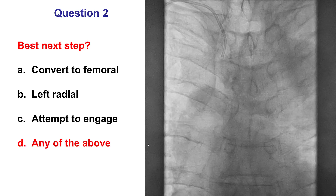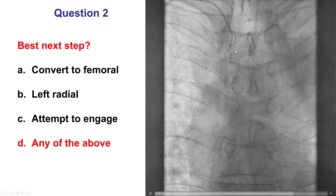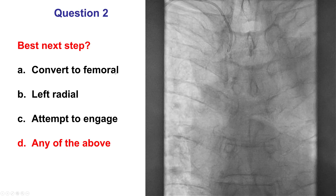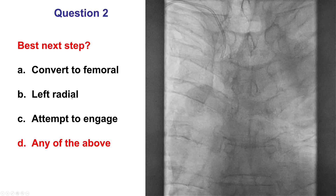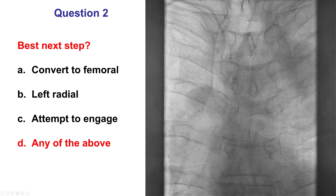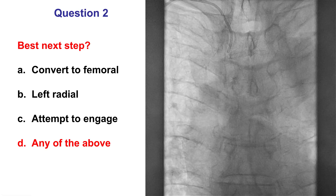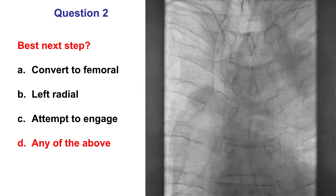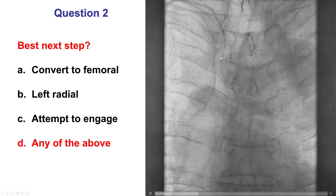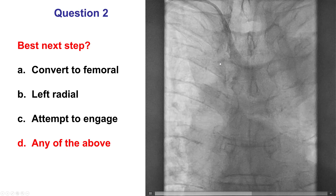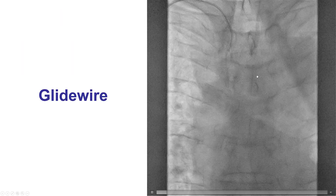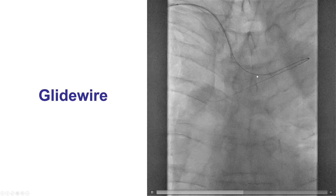The answer here is any of the above. We do know that arteria lusoria makes it much harder to engage, so converting to femoral or to left radial is perfectly appropriate, especially in cases where there is urgency — for example, in the setting of ST-segment elevation myocardial infarction. However, sometimes one can use catheters and engage the coronaries even through arteria lusoria, and this is actually what was attempted in our case.